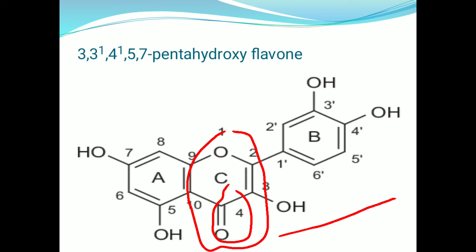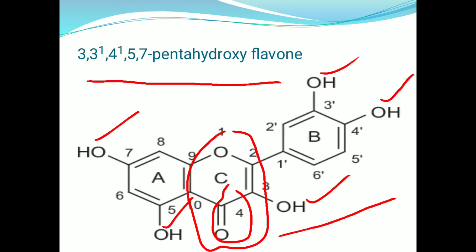In this structure, five hydroxy groups are present, at positions 3, 3', 4', 5, and 7 carbons. Overall, five OH groups are present in this structure. So quercetin is also called 3,3',4',5,7-pentahydroxyflavone.